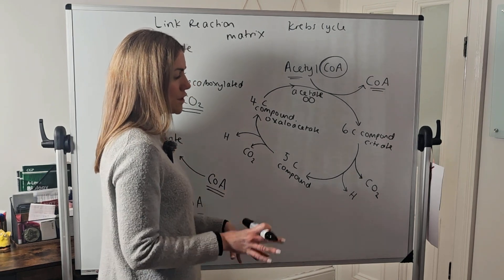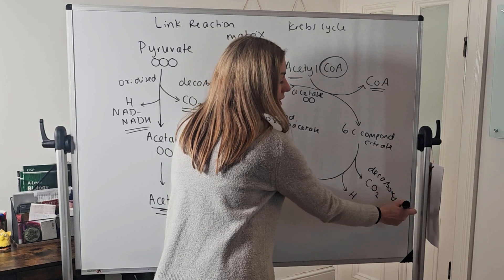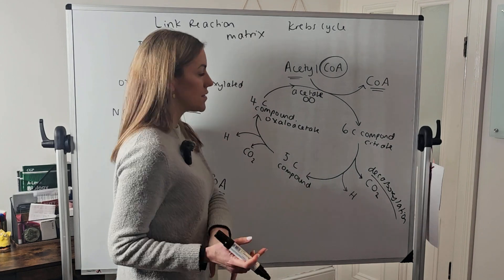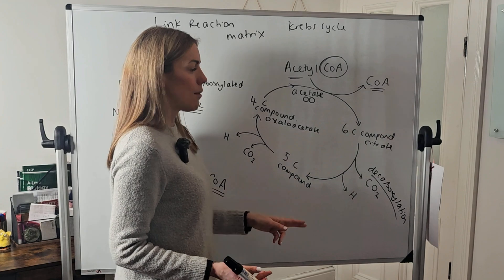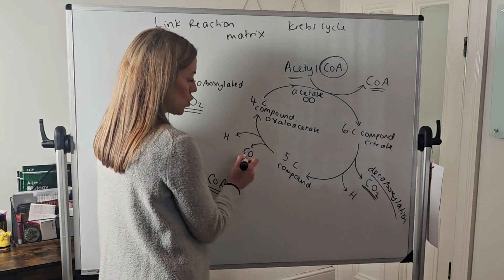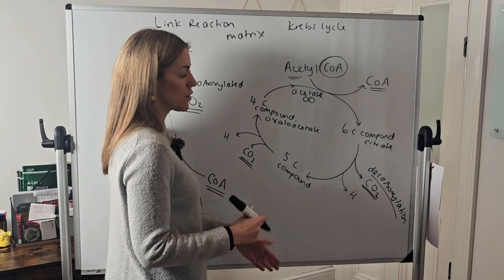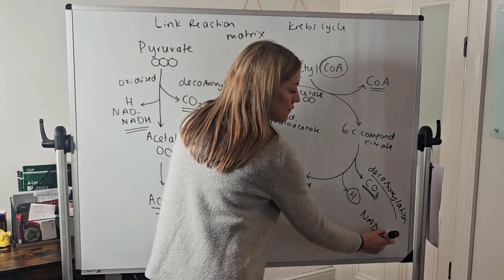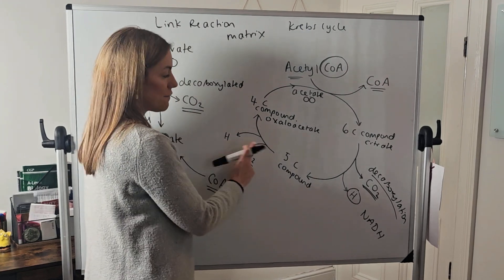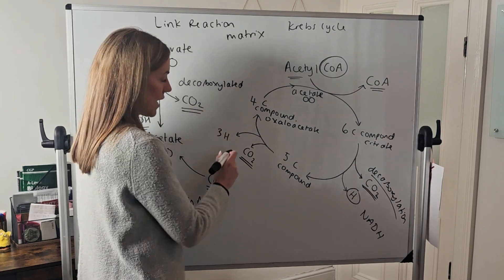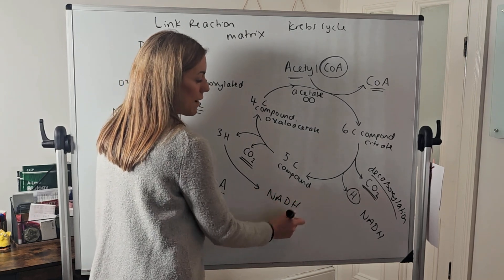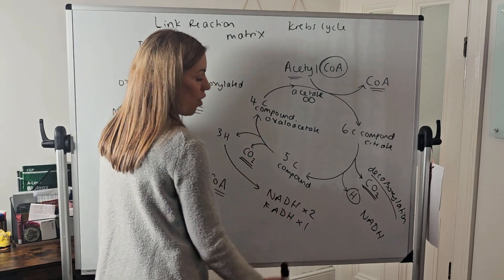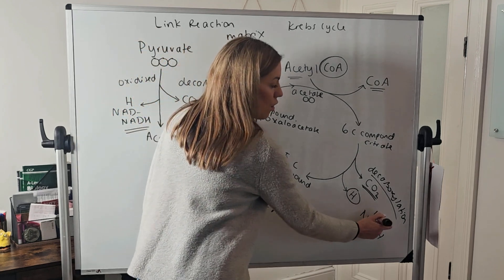There are two main types of reactions involved: decarboxylation and oxidation. Since we go from six carbons to four carbons, we need to lose two carbons — so we decarboxylate the six-carbon compound twice, producing two carbon dioxides. The six-carbon compound is also oxidized, losing hydrogen. That hydrogen is accepted by NAD to form NADH. Between the five-carbon and four-carbon compounds, another three hydrogens are lost, accepted by NAD to form two more NADHs and by FAD to form FADH.